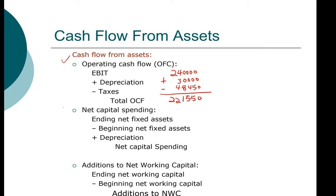We get our first item, which is operating cash flow. Next, let's look at net capital spending. We need ending net fixed assets minus beginning net fixed assets — both from the balance sheet — plus depreciation, which we already have from the income statement.